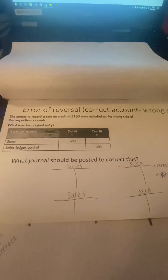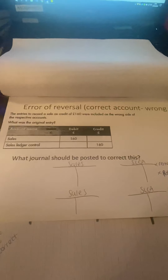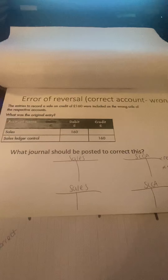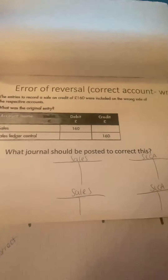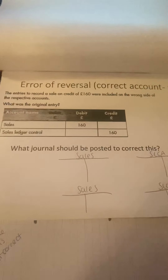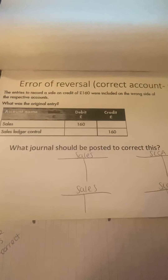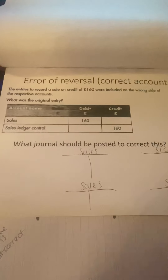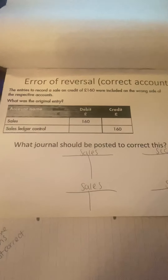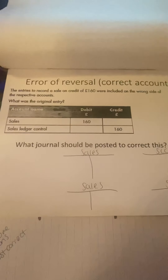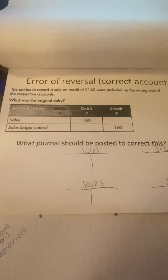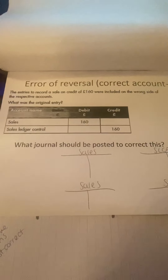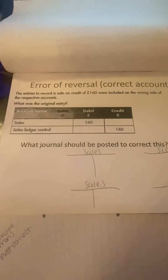This one is called an error of reversal. The name gives it away really - it's reversed because it's the correct account but you've put things on the wrong side. So where it should have been debited, it's been credited, and where it should have been credited, it's been debited.